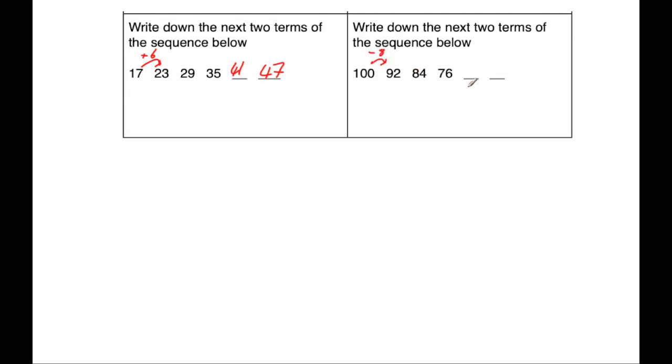If we take away another 8, that's going to equal 68. Taking away another 8 would equal 60. So the next two numbers would be 68 and 60.